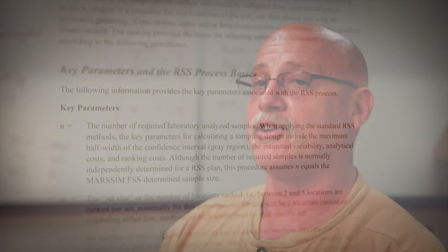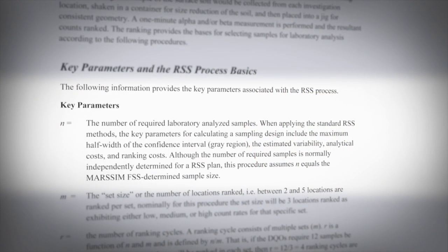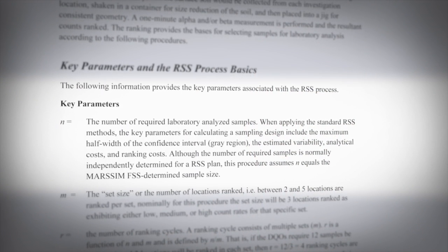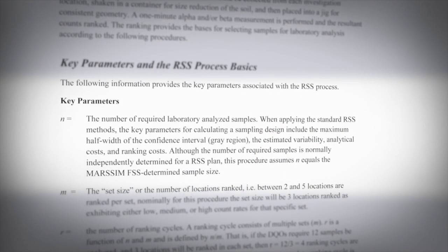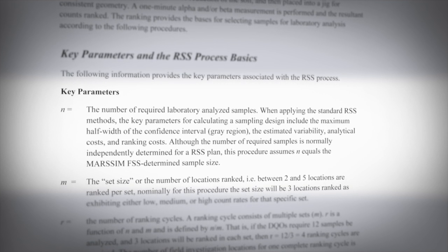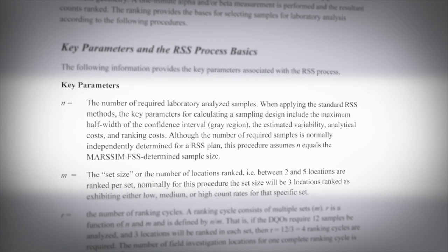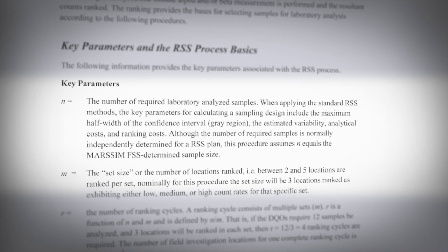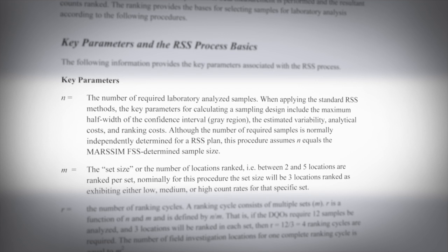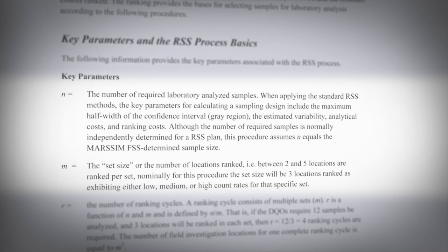Before we can apply the RSS we just need to educate ourselves and know a few key parameters. That is the number of samples required. The approach we'll discuss involves starting out with a MARSUM, one of the non-parametric tests — the sign test or Wilcoxon rank sum tests — determining how many samples we need, and using that sample set to form our subunits for the ranked set sampling.